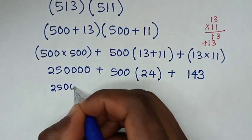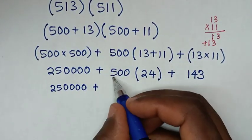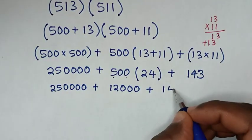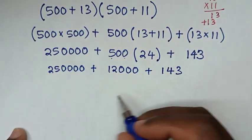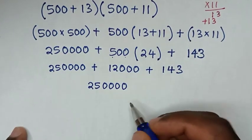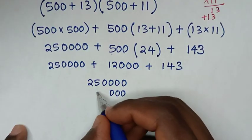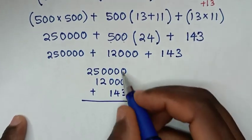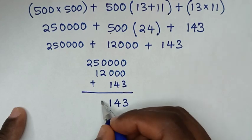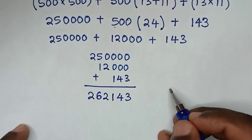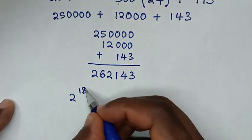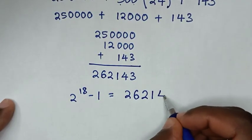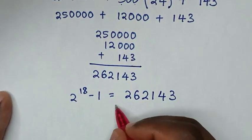So we have 250000, plus 500 times 24 which is 12000, plus 143. Adding these: 250000 plus 12000 plus 143 equals 262143. Therefore, 2 power of 18 minus 1 is equal to 262143. This is our final answer.